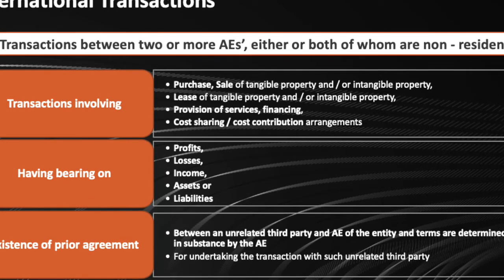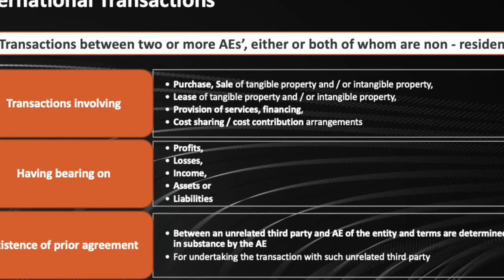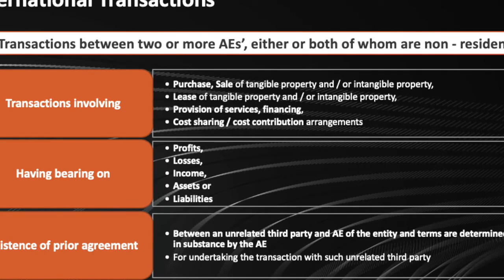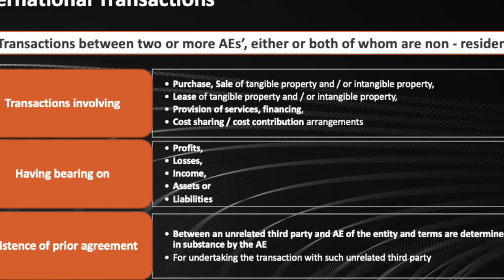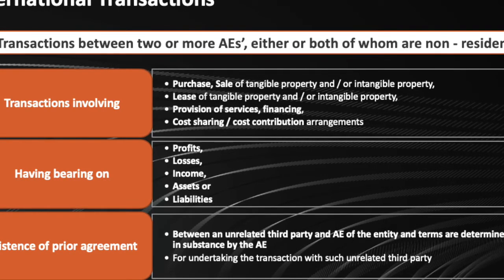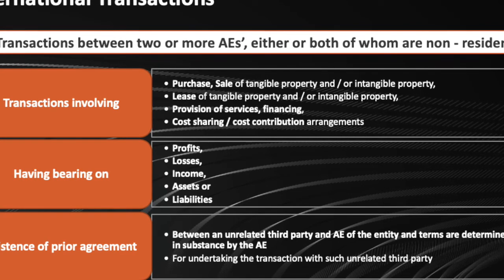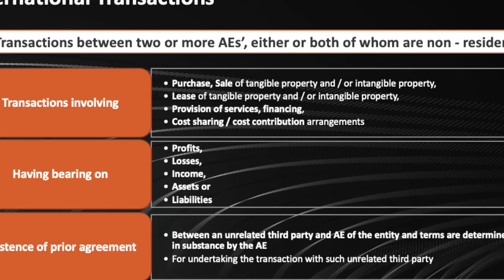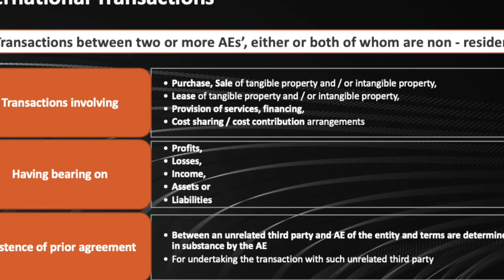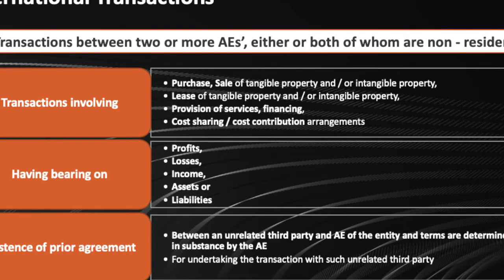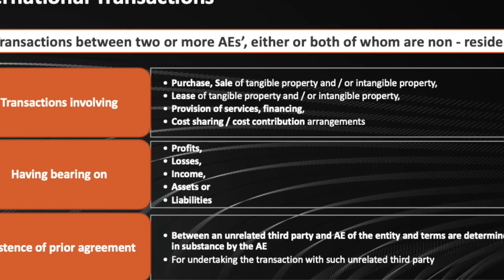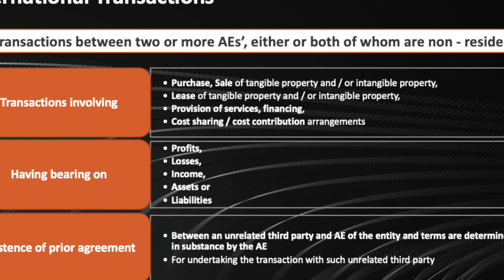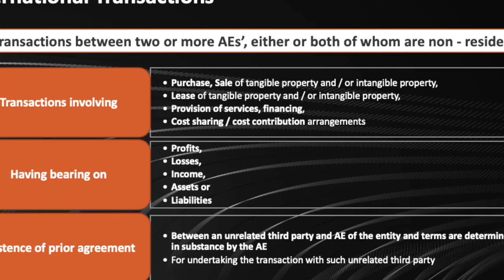Now it's important that such international transactions should have bearing either on the profit and loss or the balance sheet position of the company. Any financial position also includes the positions that are taken in the notes to accounts, which are the contingent liabilities, which are an integral part of the company's financial statements.